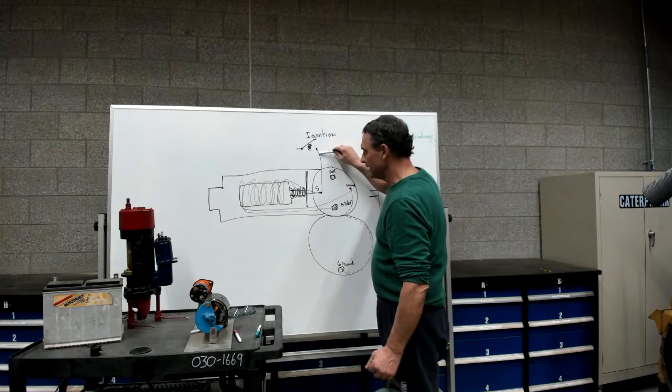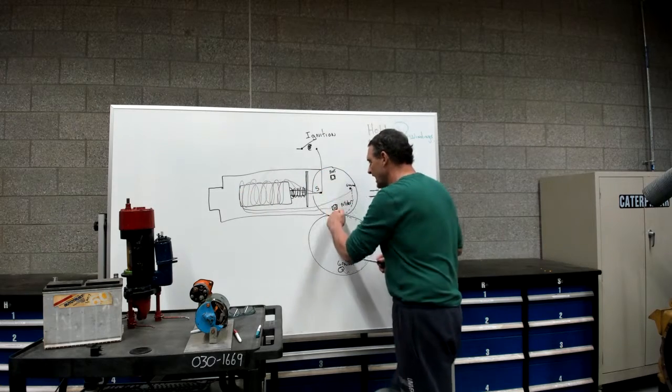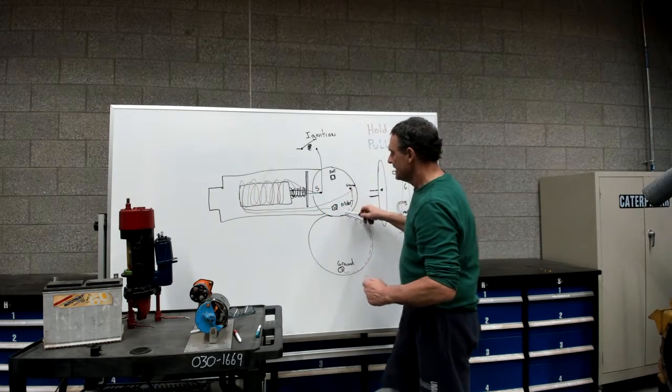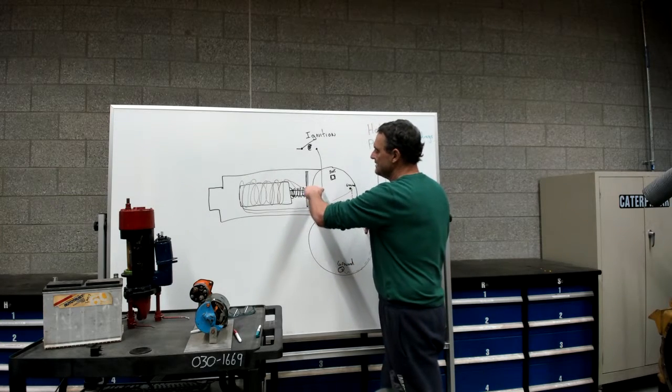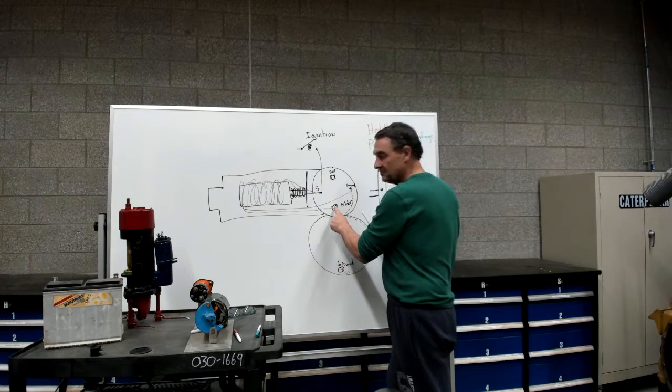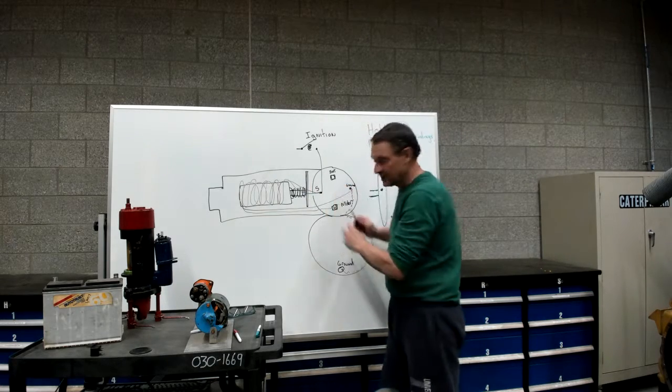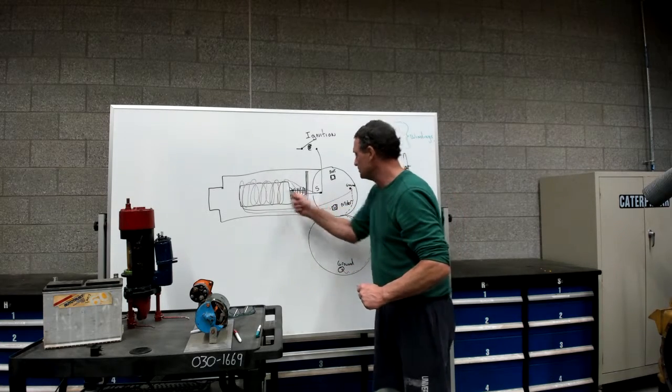So we close the switch, the pull in and the hold in windings excite, it pulls it in and makes contact between the battery and the motor. Now when that happens the motor starts to turn and all the power in the pull in windings goes into the motor terminal and basically negates it because it's charging the motor terminal. Now the hold in windings go from the S terminal to the ground.